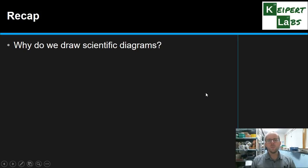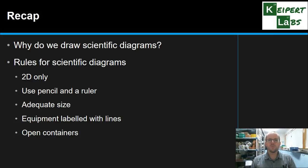So we talked about why we draw scientific diagrams to allow other scientists to repeat our work and to capture what we did. We went through the rules: using 2D only, pencil and ruler, make sure that it's adequate size, labeling equipment using lines not arrows, and drawing open containers, and showed you an example as well. Thanks very much for watching. Bye for now.